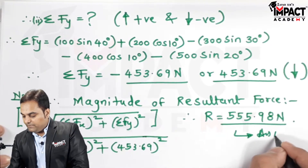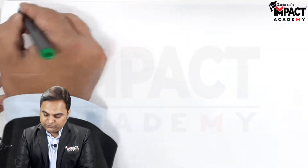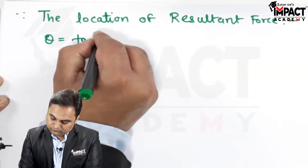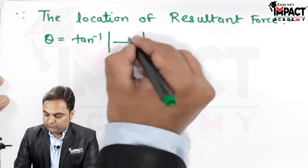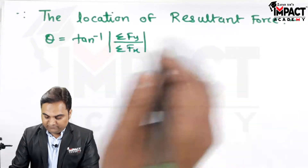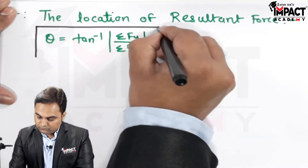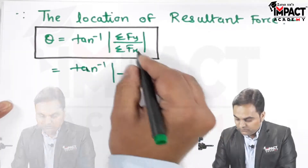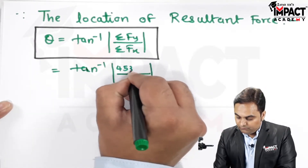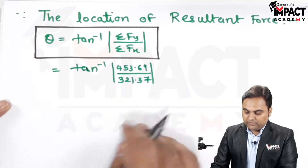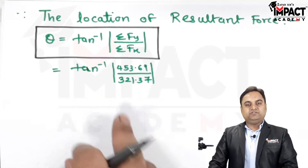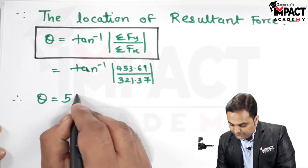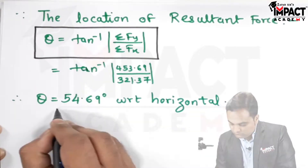That's the first answer — the magnitude is 555.98 N. For the direction, the formula is θ = tan⁻¹(|ΣFy| / |ΣFx|) = tan⁻¹(453.69 / 321.37). Note: we use the modulus (ignore the negative sign) to find the angle. Therefore, θ = 54.69° with respect to the horizontal.